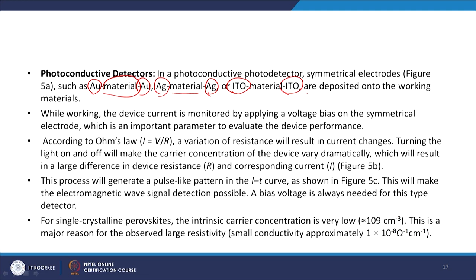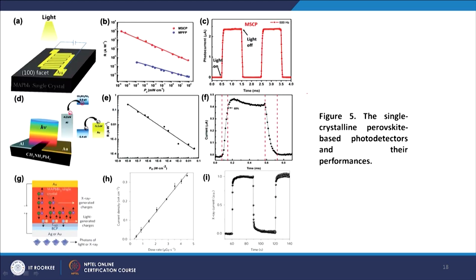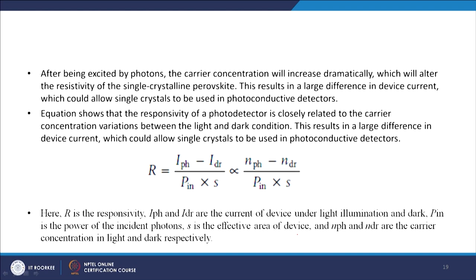For single crystal perovskites, the intrinsic carrier concentration is very low, around 10^9 cm⁻³ — a major reason for the observed large resistivity and small conductivity of approximately 1×10⁻⁸ Ω⁻¹cm⁻¹. In the photoconductive mode single crystal perovskite, the light-on and light-off regions show sequential photocurrent versus time behavior. The same photodetector has also been used for X-ray detection, where the Y-axis is X-ray current and X-axis is time. After being excited by photons, carrier concentration increases dramatically, altering the resistivity of the single crystalline perovskite, resulting in a large difference in device current that allows single crystal to be used in photoconductive detectors.